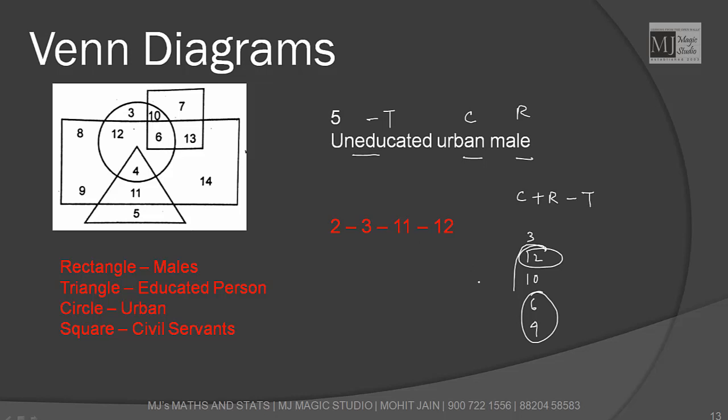Minus T. It should not be in T. In T there is 4. We will remove it. 6 is in square, we don't take it. It is only 12. C plus R minus T. Option left is 12.